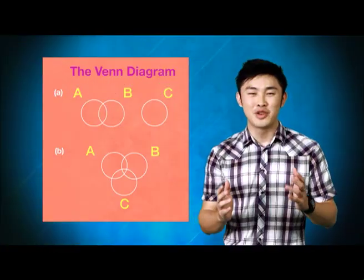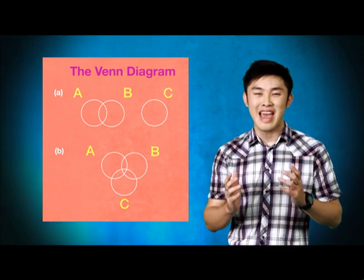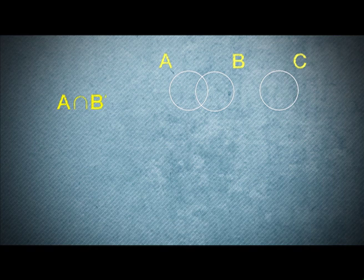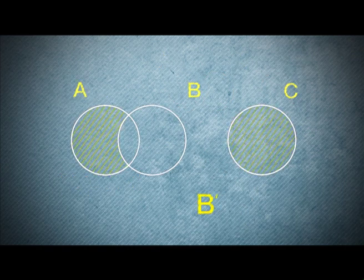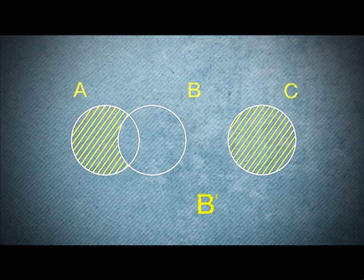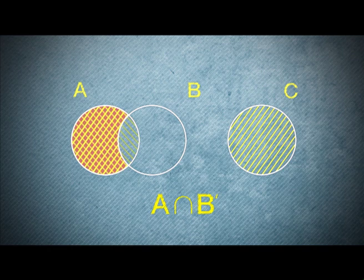The Venn diagram shows sets A, B, and C. In the first diagram, shade A intersect B complement. While in the second diagram, shade A union B intersect C complement. So, for the first diagram, B complement represents any region outside of B. So, A intersect B complement is the overlapping region of A and B complement. Ta-da! The answer.